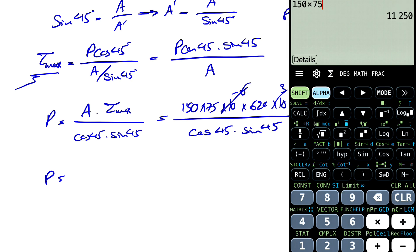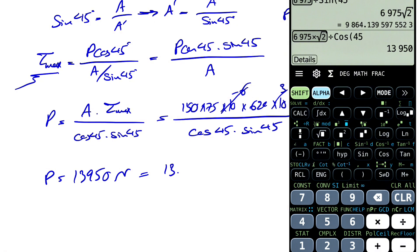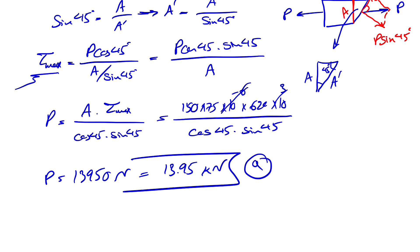And let's see what we get. 150 times 75 times 620 divided by 1,000 divided by sine of 45 divided by sine of 45. And that's going to give us 13,950 newton, or we can report as kilonewton, which will be 13.95 kilonewton. So that's the answer for the A part.